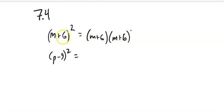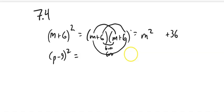Now pay careful attention where the pieces come from. m times m is m². 6 times 6 is 36. And notice this middle term is going to be 6 times m plus 6 times m. It's 2 of those 6m's, so it's 12m.